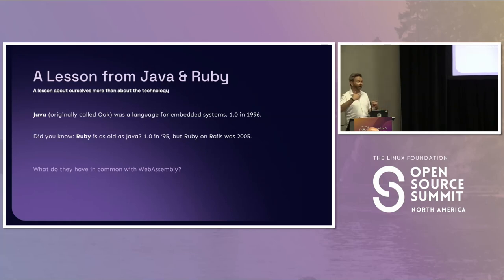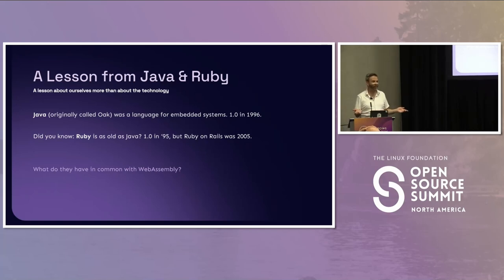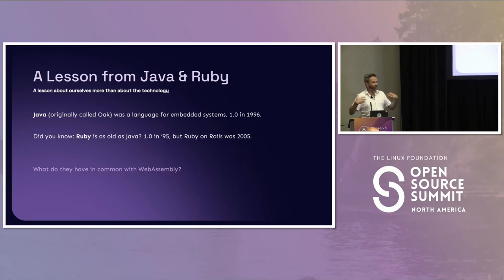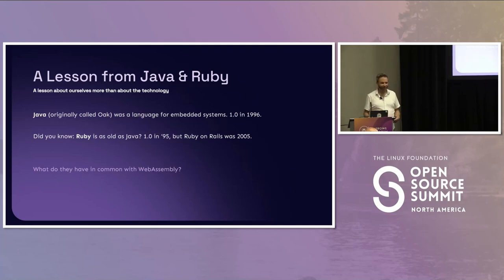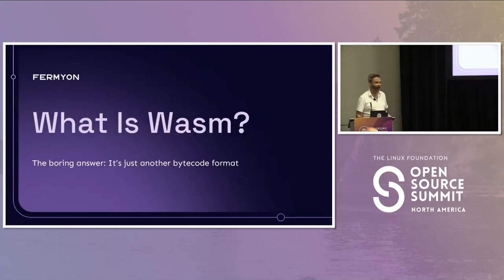We could list off a litany of examples from our industry. The web itself was originally a technology for transmitting physics papers, and a very small percentage of web traffic today has anything to do with physics papers. Successful technologies break out of their original design intent and flourish in areas the original creators may never have foreseen. That's the story I want to tell today about WebAssembly — a technology created for the browser that we're now seeing some really cool applications of elsewhere.